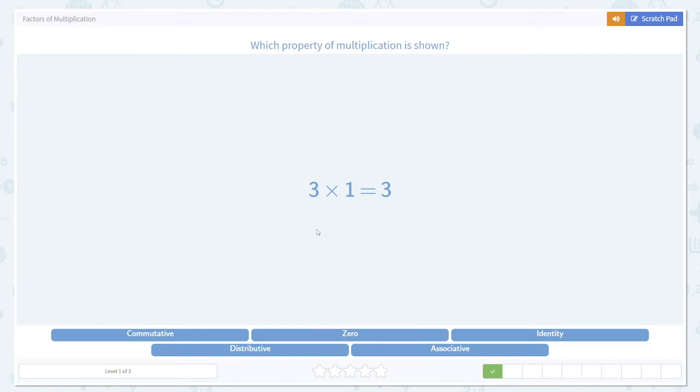Here we have the same thing. 3 times 1 is 3 again. This is the identity property. We have a number multiplied by 1 giving us that number back.